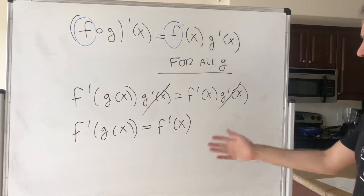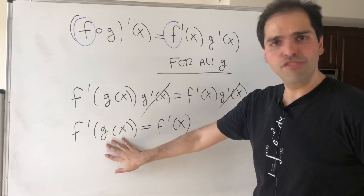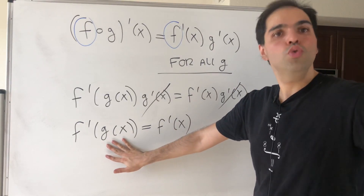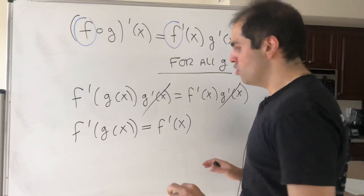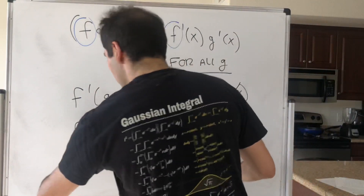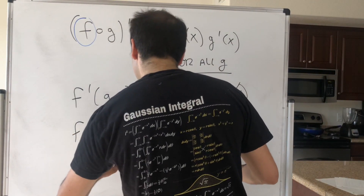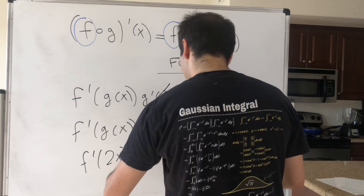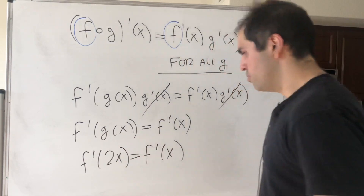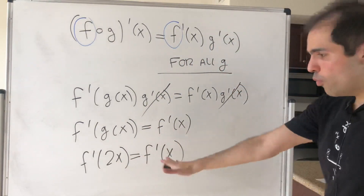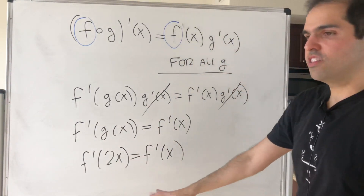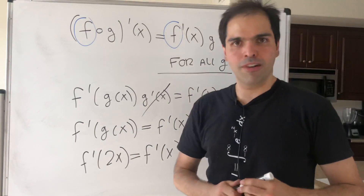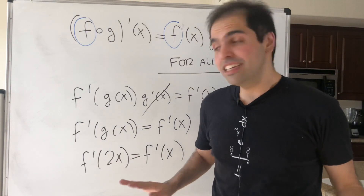But again, since this is true for every g, we can just choose any g that we want. For instance, choose g of x equals 2x. So the question becomes: for which f is it true that f prime of 2x equals f prime of x?